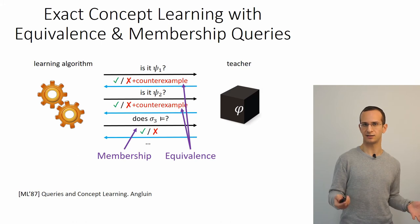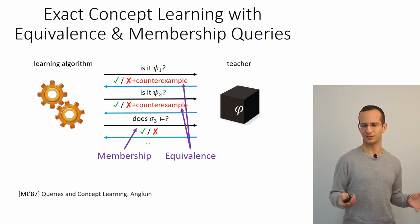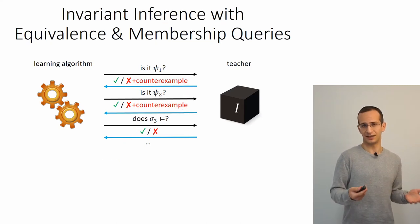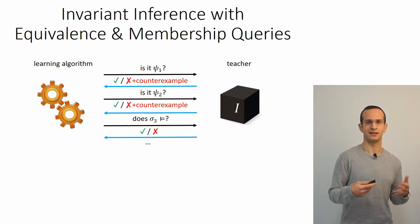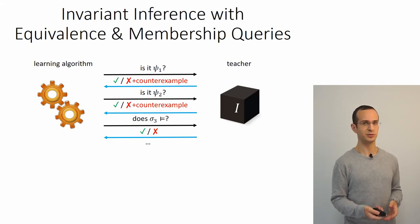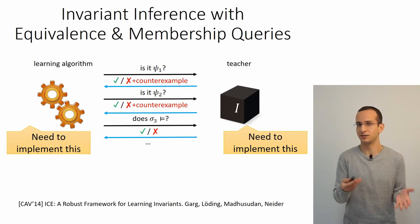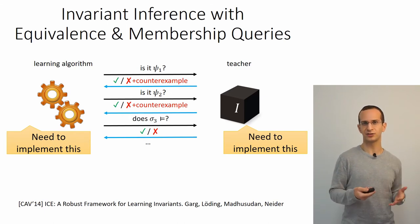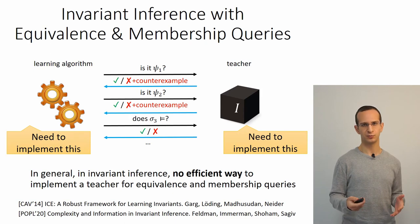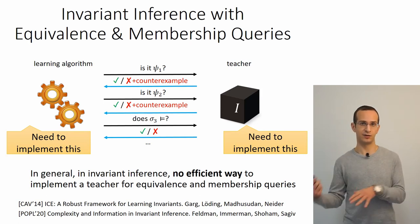This is the model in exact learning, and many results exist. What does it have to do with invariant inference? Ideally, we would use the same algorithms, identifying the unknown inductive invariant via equivalence and membership queries. The problem is that in invariant inference, it's not enough to implement the learner—we also need to implement the teacher. Unfortunately, in general there's no efficient way to answer equivalence and membership queries, and thus no way to implement exact learning algorithms as invariant inference algorithms.